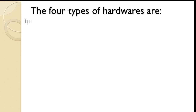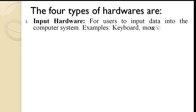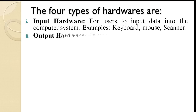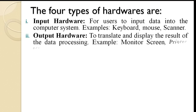The 4 types of hardware are: 1. Input Hardware — for users to input data into the computer system. Examples: Keyboard, Mouse, Scanner. 2. Output Hardware — to translate and display the result of the data processing. Examples: Monitor Screen, Printer.